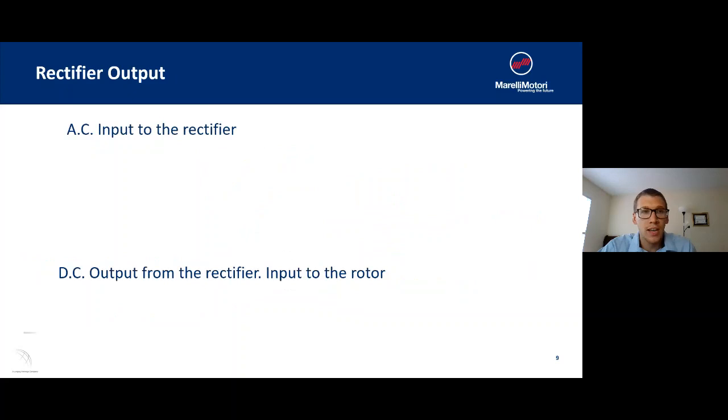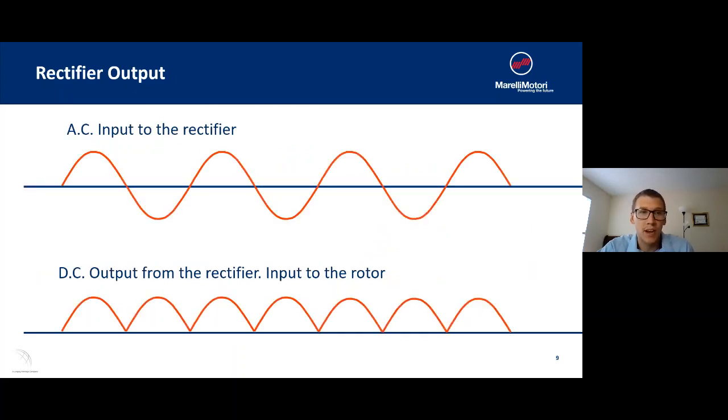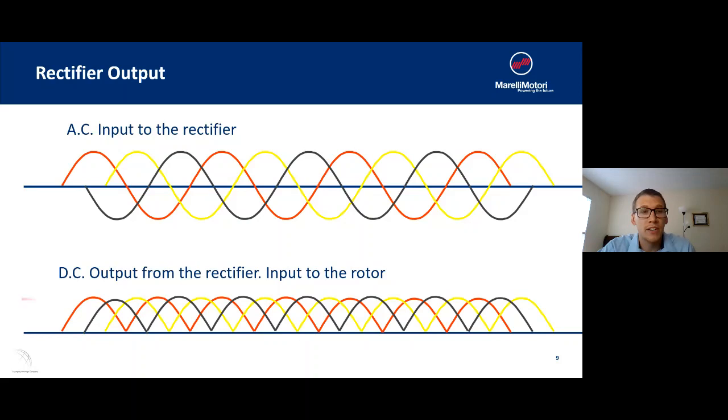If we look at how the rectifier operates, we're going to have a sine wave going into the rectifier, but coming out we're only going to take the top and bottom half of the wave and it's going to be inverted. Once we have all three phases of our current going in, we're going to get a very stable DC output from the rectifier into the main rotor.